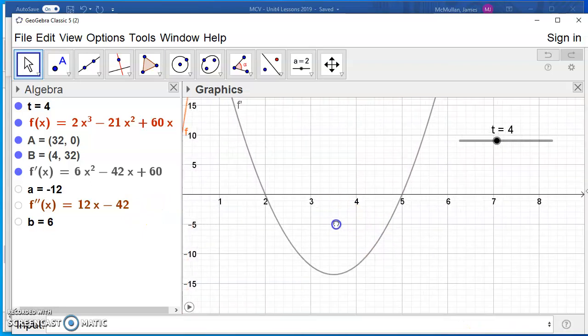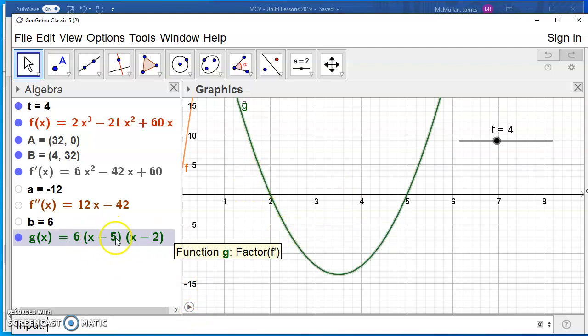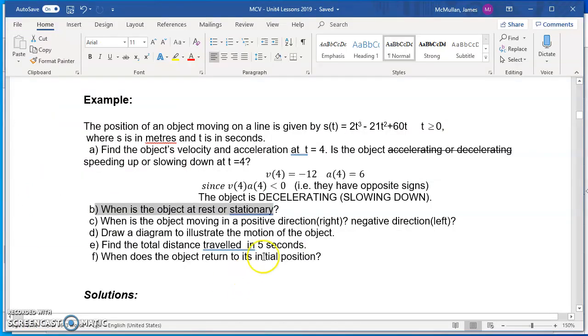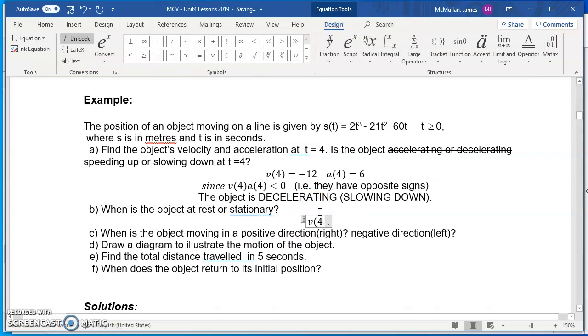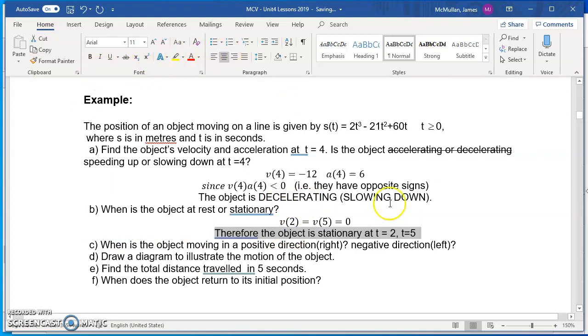Then we found that a of 4 is equal to positive 6. Now, so what I'm going to write our answer is since v4 times a4 is less than 0, right, as in, and remember, this is just like the mathematician's way of saying, i.e. they have opposite signs. The object is decelerating. That is to say, slowing down. I think slowing down is a better answer rather than decelerating. So that's how you do that kind of question.